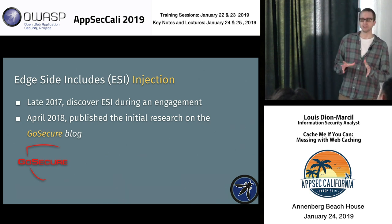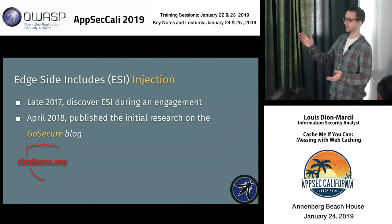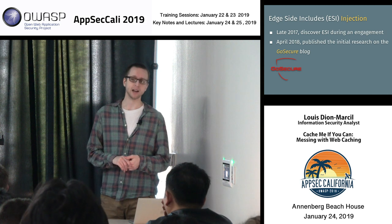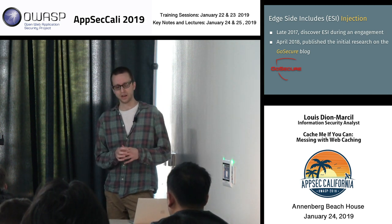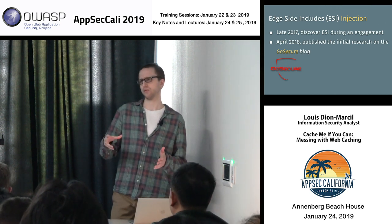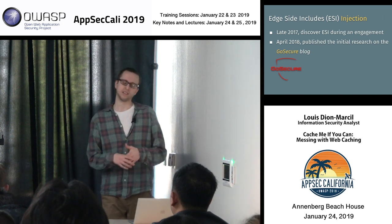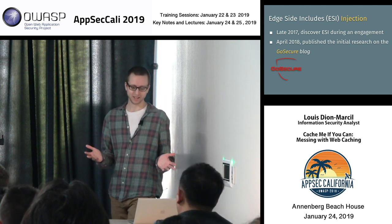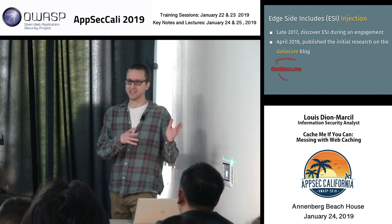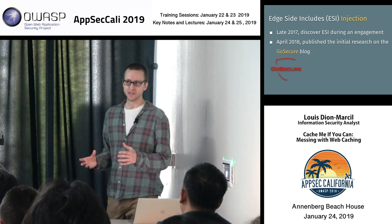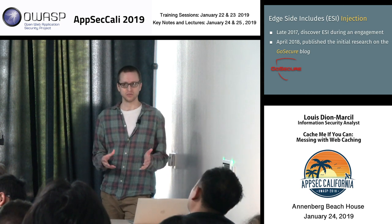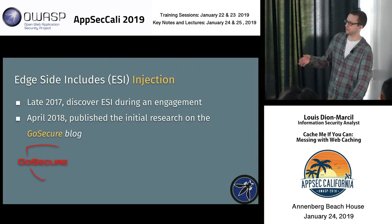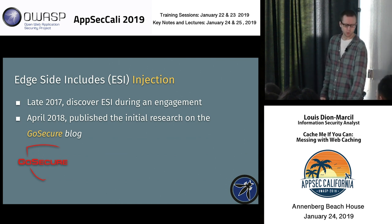We discovered ESI injection in late 2017. A colleague at GoSecure was tasked with a proactive engagement at a major ISP client in Montreal — a configuration overview of all their Varnish caches. We kept seeing ESI throughout the config files, but nobody on our team had heard of ESI. From late 2017 to April 2018, I got my hands on every ESI specification I could find, looking for zero-days and ways to abuse them. The resulting blog post on the GoSecure website covers all the details.